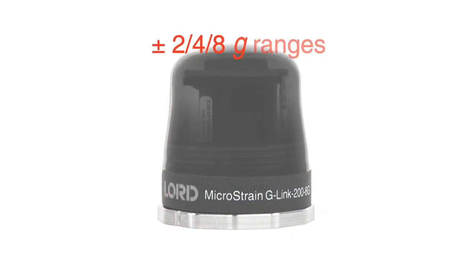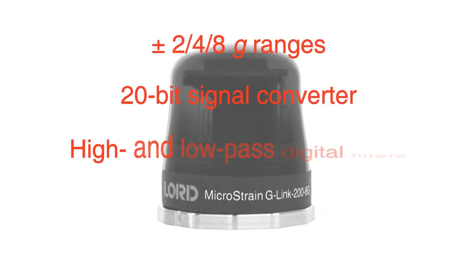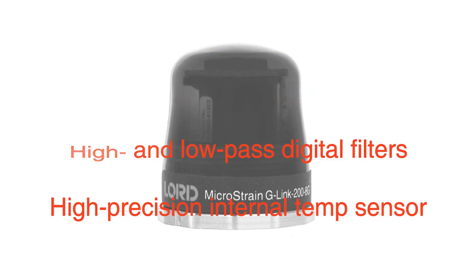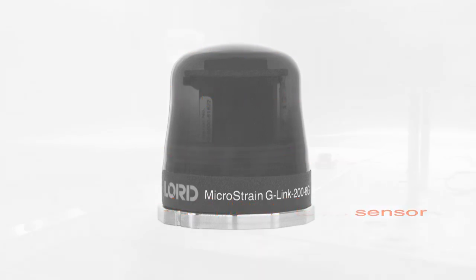The G-Link 200 can be user-configured to plus or minus 2, 4, or 8G ranges, and it includes a 20-bit signal converter, user-controlled high and low-pass digital filters, and an onboard high-precision temperature sensor.